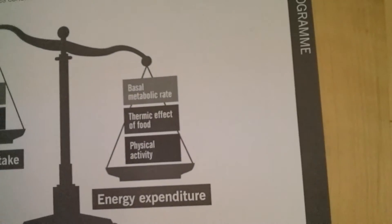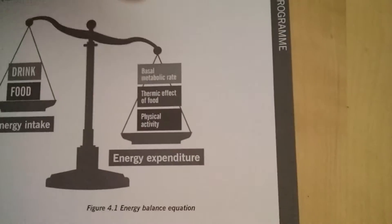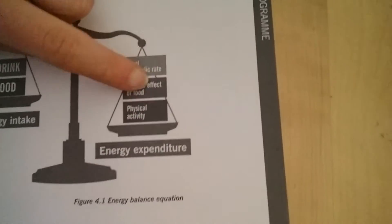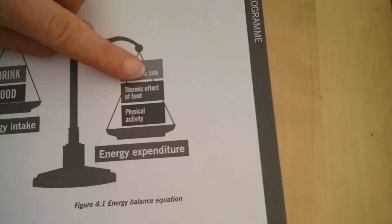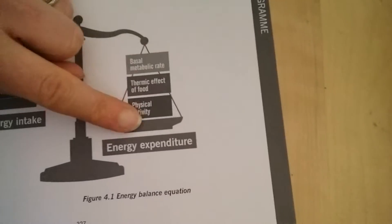So: in goes drink and food, and out in terms of energy expenditure is BAT — basal metabolic rate, activity, and thermic effect of food. Three really important points, so make sure you consider them in your exam. It's pretty likely that a nutrition exam will ask you what can contribute towards energy expenditure.